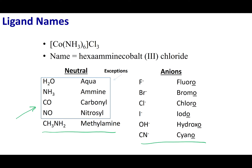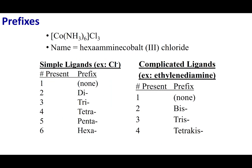After naming the ligand, you need to indicate how many ligands are attached to the complex ion. You designate a prefix for the number of ligands. Go back to your Greek prefixes. In the complex we were discussing, there are six ammonias, so six gets the prefix hexa.